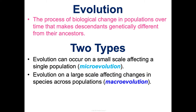I also want to remind you from unit one that evolutionary theory is a theory, but in science a theory is an explanation of why something happens based on scientific evidence. This is not just a random guess — there's a lot of scientific evidence to back it up, and I'll be sharing that with you as well.